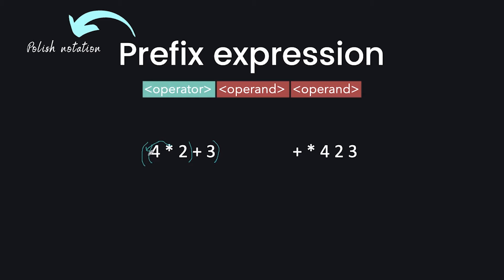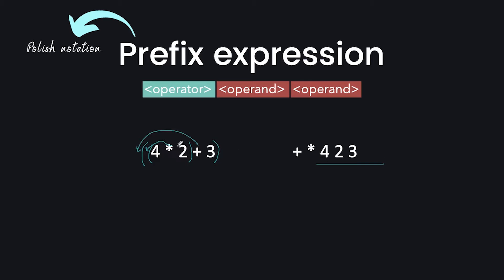Here the multiplicative sign is the operator with operands 4 and 2, so I move the multiplication sign out to the front. Then for the outer brackets, my operator is the plus sign, so I move it out to the front. The resulting prefix notation for this infix expression gives us: plus, multiplication sign, 4, 2, and 3. So this is our prefix notation for this infix expression.